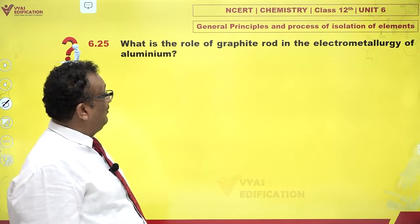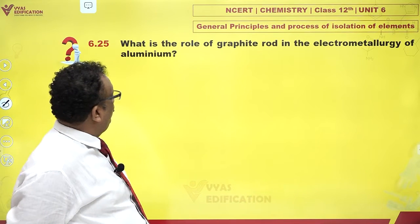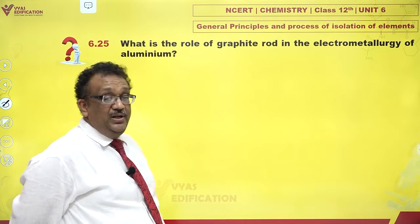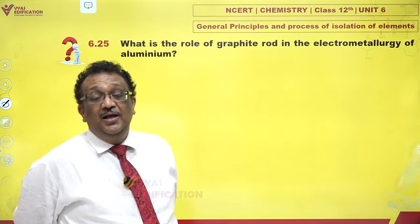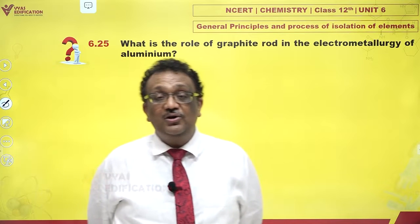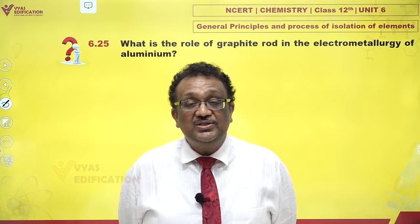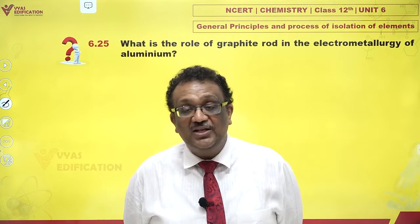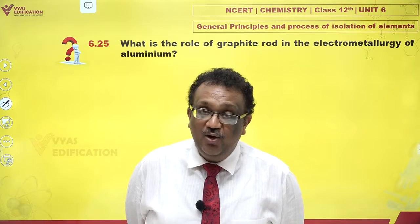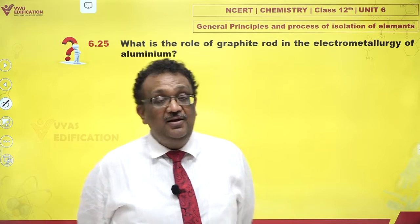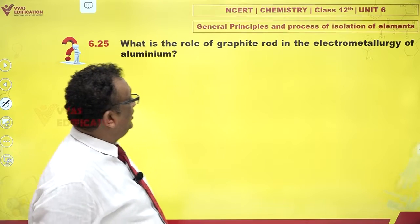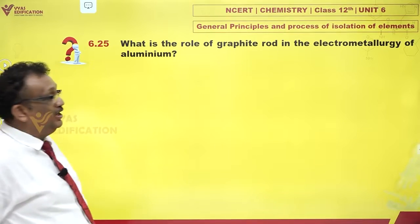What is the role of graphite rod in electrometallurgy of aluminium? Graphite rods are used as cathode as well as anode in electrometallurgy of aluminium.